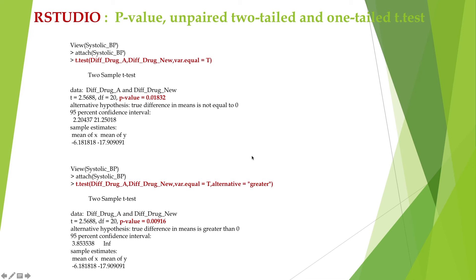Here is the p-value we got from RStudio. You can download the RStudio program free from the internet. For the first test we wanted to compare whether there is a difference in our data or not. The p-value was 0.01832, which is less than 0.05, so we are rejecting the null hypothesis and approving the alternate hypothesis. There is a significant difference between these two datasets.